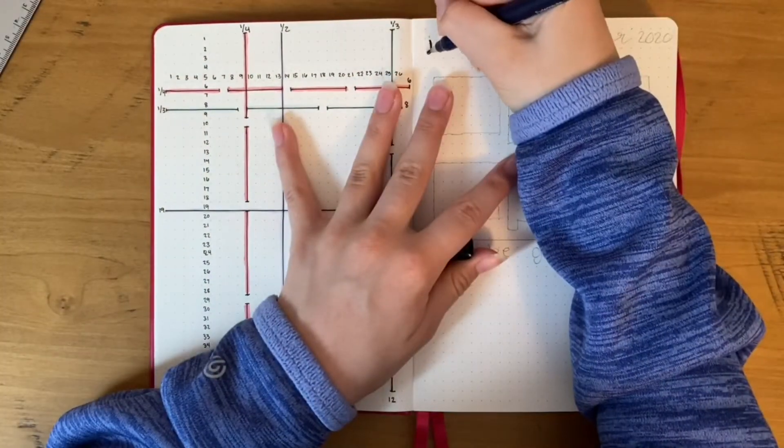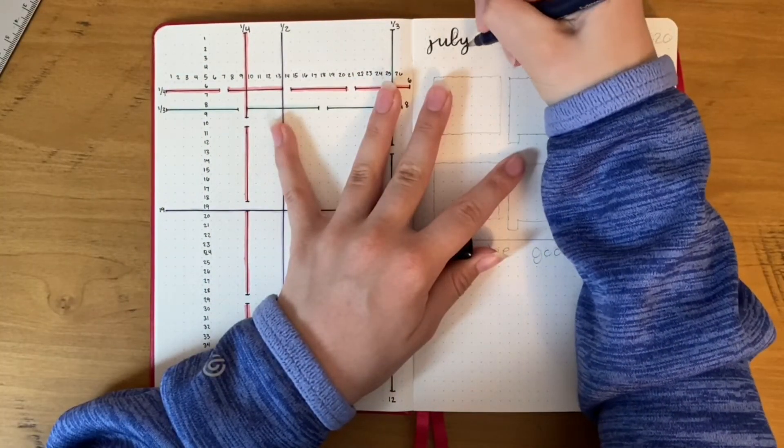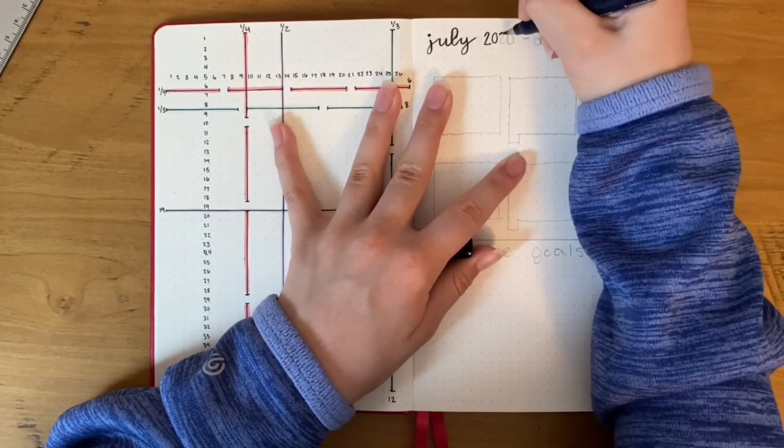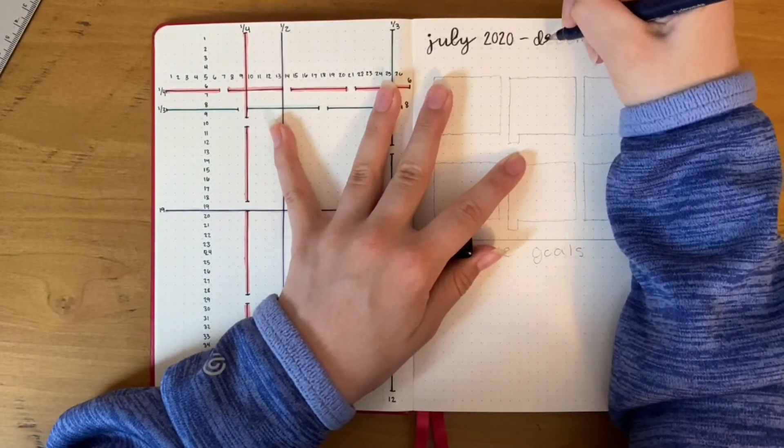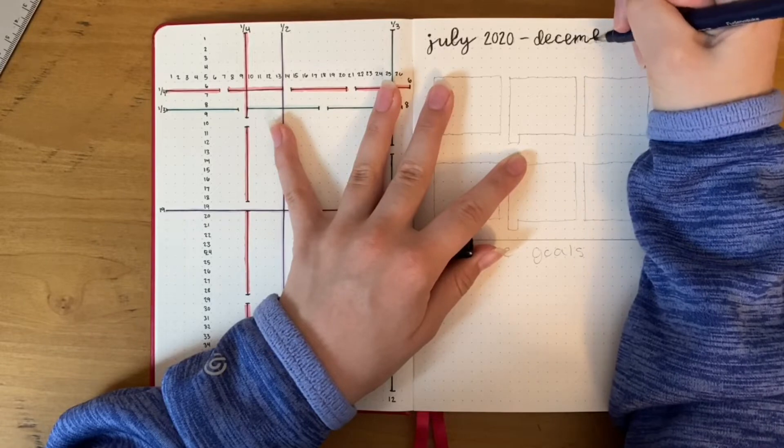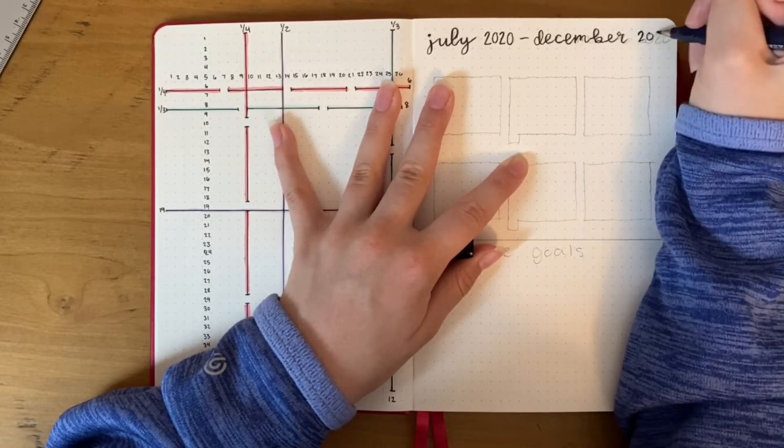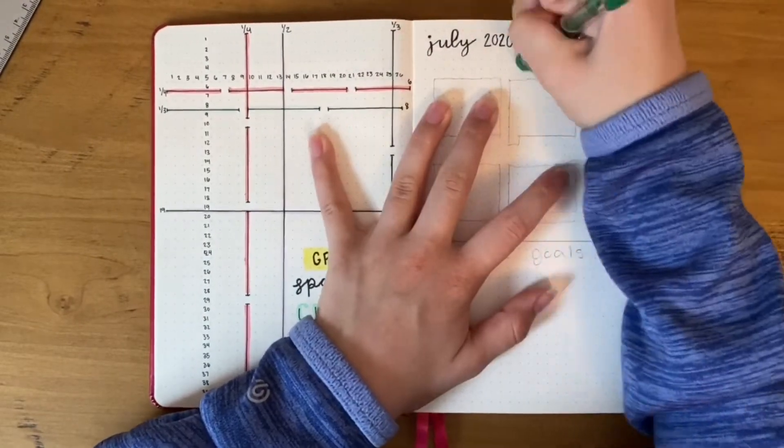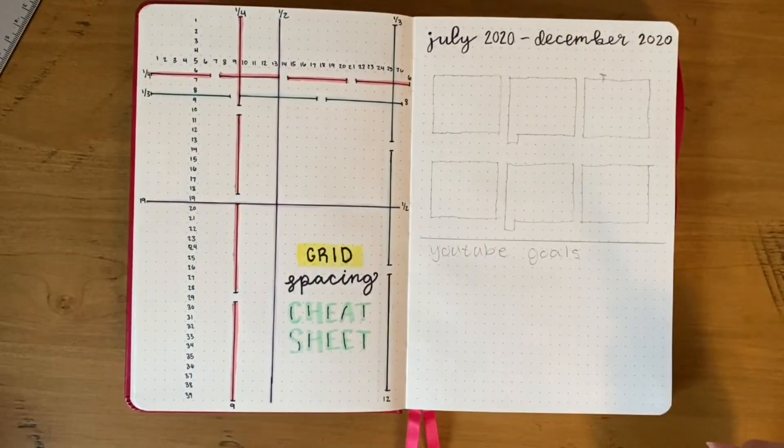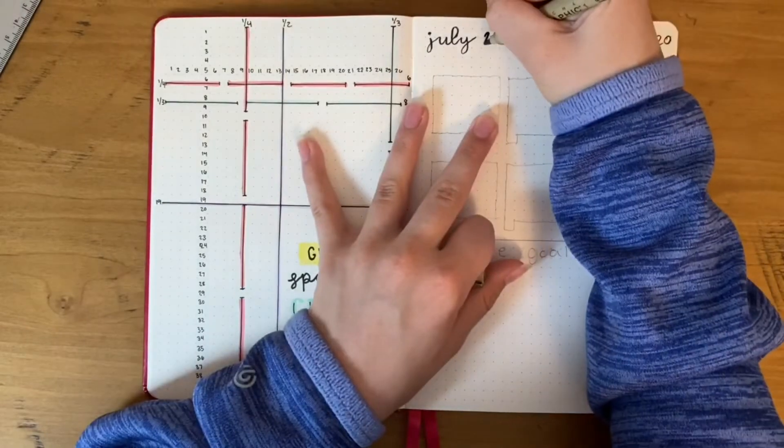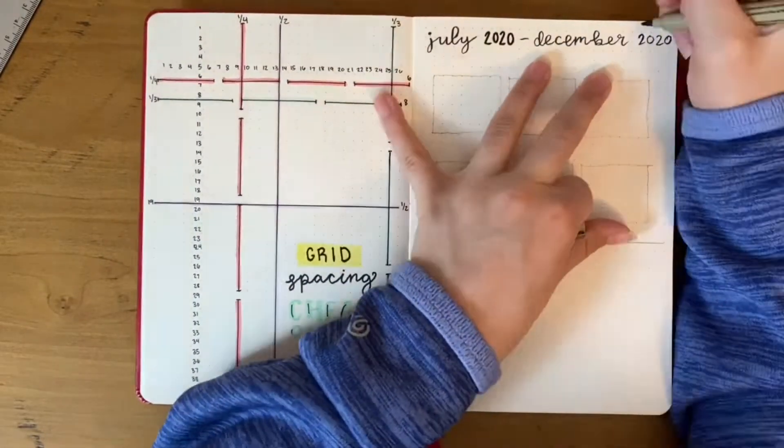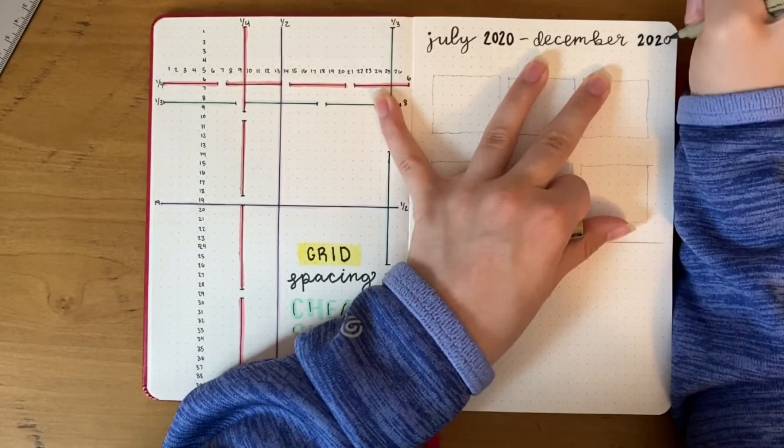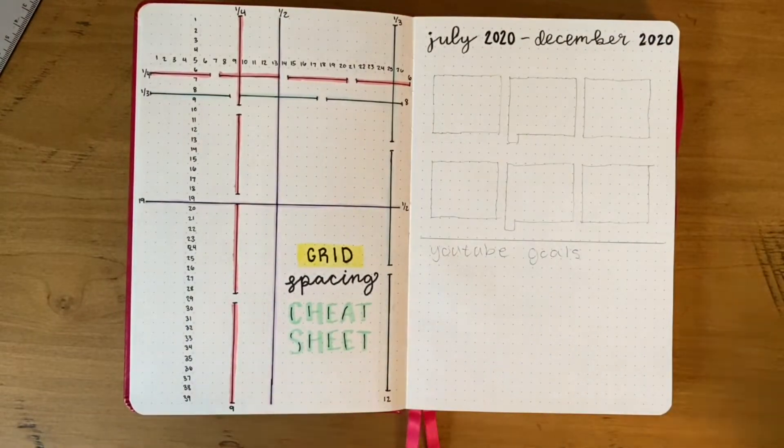I sketched this next spread off camera to get a feel for what I wanted it to look like. I just wanted to put in a little calendar from July to December because it's already almost July. I wanted the second half of the year in here for different dates and for spreads I might need in the future. This is a super easy spread except it takes a really long time to draw.